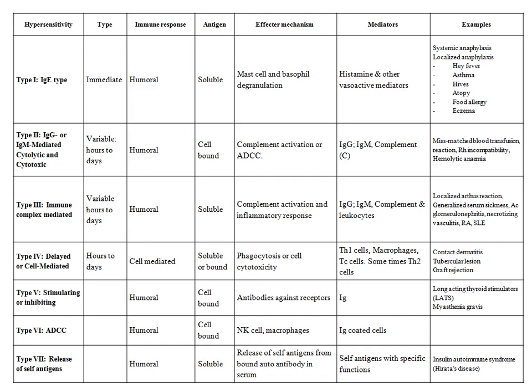Type 3 is immune complex mediated. The duration can be hours to days and it involves the humoral arm of immunity. The antigen is soluble; when combined with antibody it activates the complement, injuring host cells and causing an inflammatory response. Mediators are IgG, IgM, complement, and leukocytes. Examples include Arthus reaction, serum sickness, acute glomerulonephritis, necrotizing vasculitis, rheumatoid arthritis, and systemic lupus erythematosus.